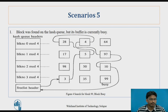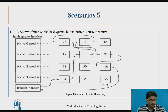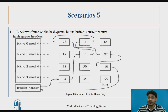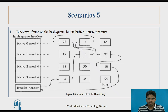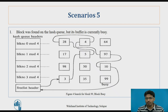Now scenario 5 — this is the last scenario of the getblock algorithm. Here the block was found on the hash queue but its buffer is currently busy. A process searches for a block on the hash queue, that block is present, but it has already been assigned to some other process which is currently performing operations with that block.